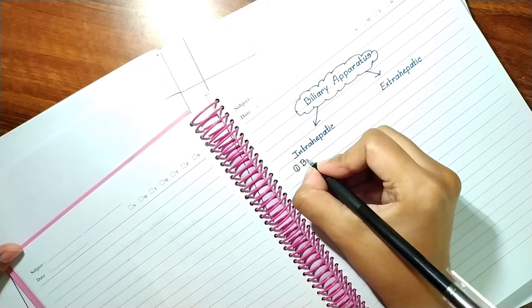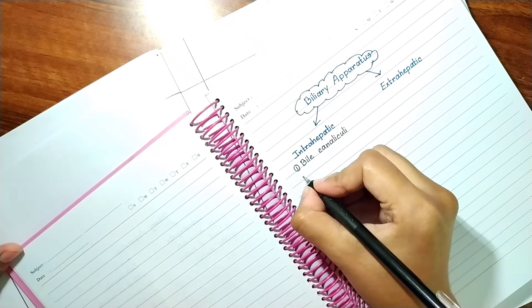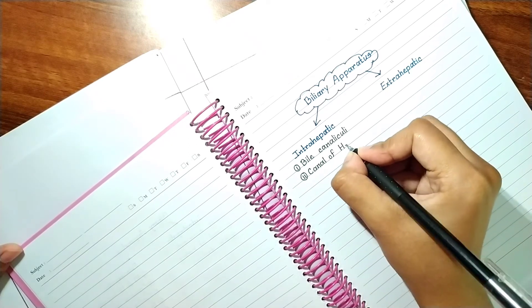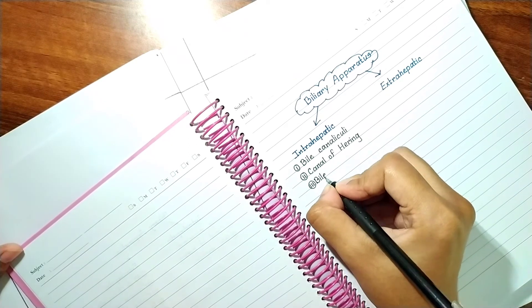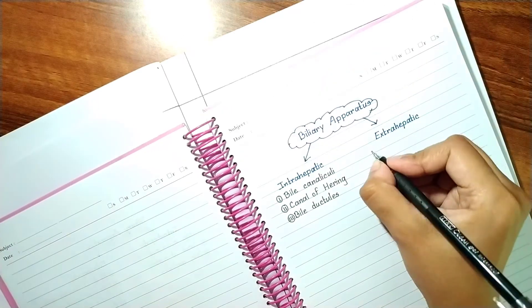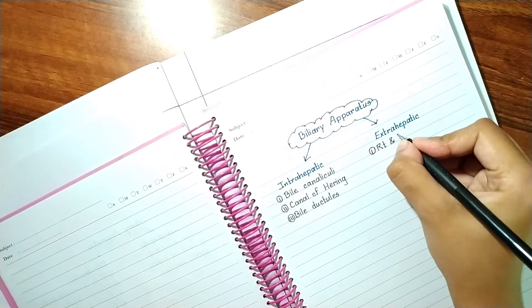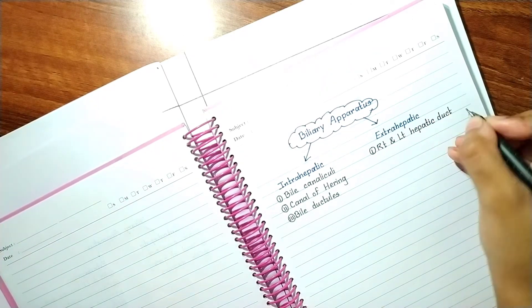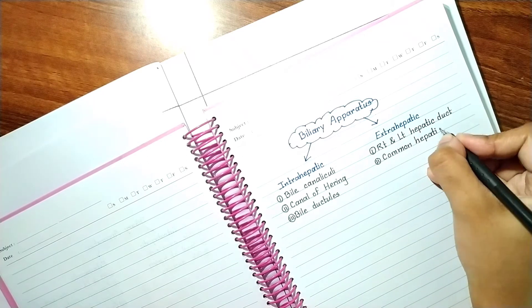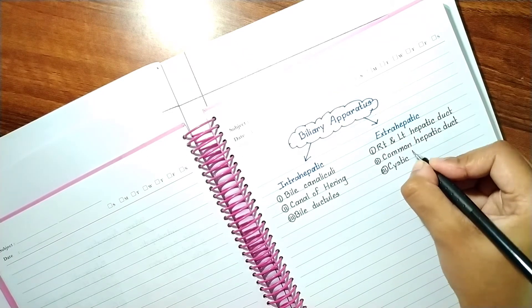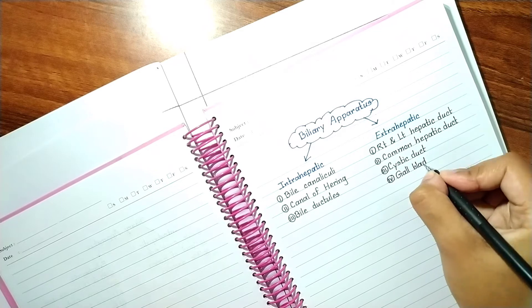Intrahepatic biliary apparatus includes bile canaliculi, canal of Hering, and bile ductules. Extrahepatic biliary apparatus includes right and left hepatic duct, common hepatic duct, cystic duct, gallbladder, and common bile duct.